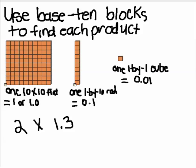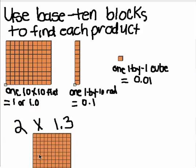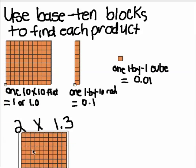I need to make two groups of 1 and 3 tenths. This represents 1. And because the 3 is in the tenths place, we have to use three 1 by 10 rods in each group.